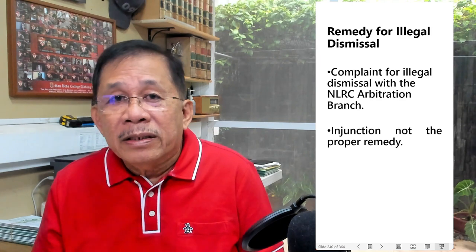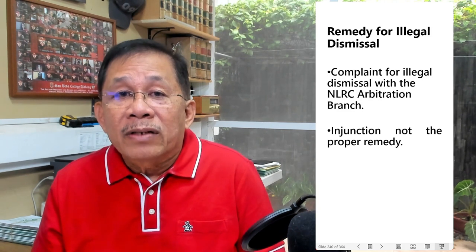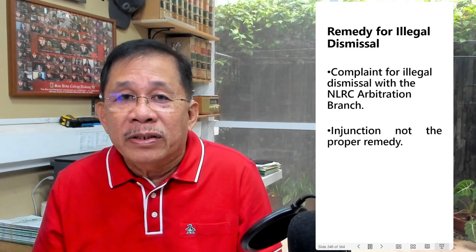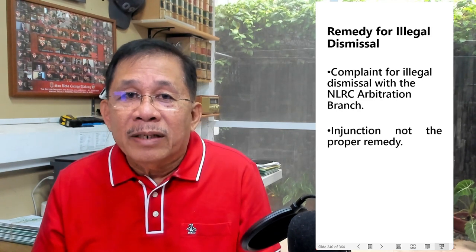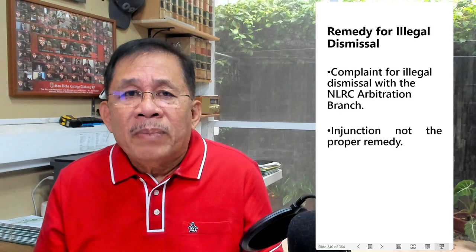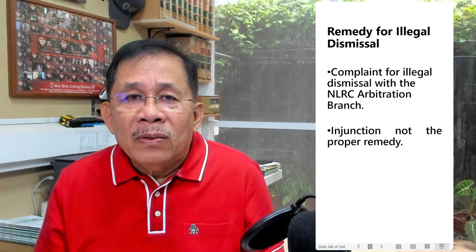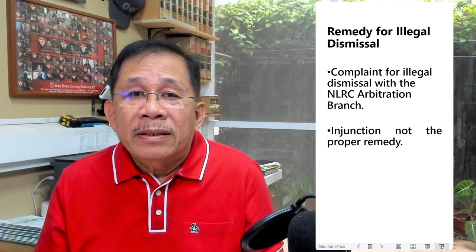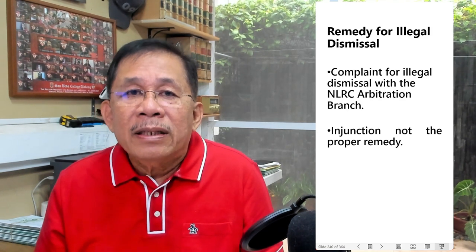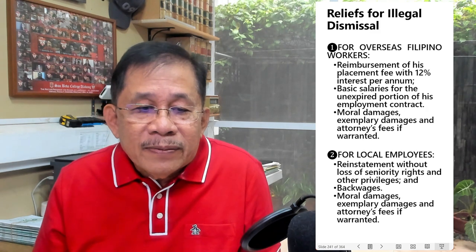In PAL versus NLRC, PAL dismissed two flight attendants because of currency smuggling. Instead of filing a complaint for illegal dismissal, they filed a petition for injunction with the NLRC, praying that PAL be enjoined from dismissing them and to reinstate them with back wages. The NLRC issued an injunction. The Supreme Court ruled that the NLRC was not correct because the power of the NLRC to issue an injunctive writ originates from a labor dispute. In this case, there was no labor dispute because there had yet been no complaint for illegal dismissal filed with the labor arbiter, and therefore the NLRC could not validly entertain the action for injunction.